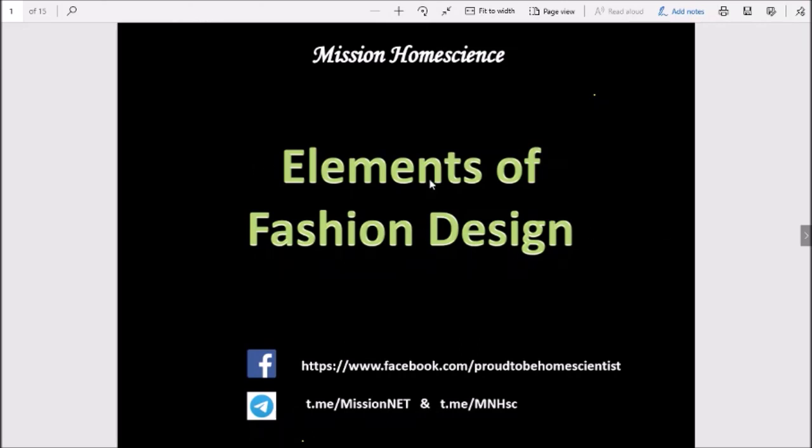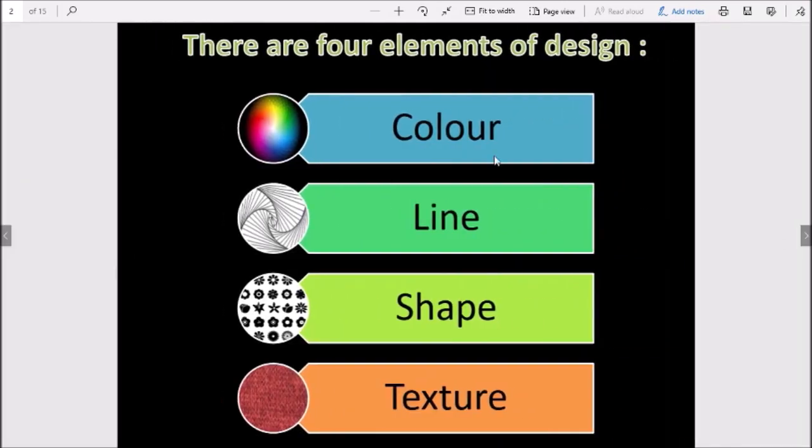Elements are basically the tools that give clarity to a visual idea. The meaning that a fabric or fashion designer wants to depict is communicated through these elements. We have four elements in any design: first is color, second is line, third is shape, and fourth is texture.